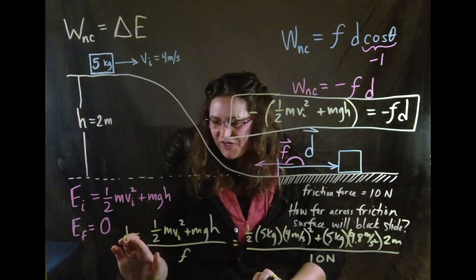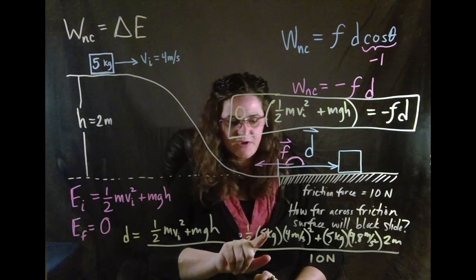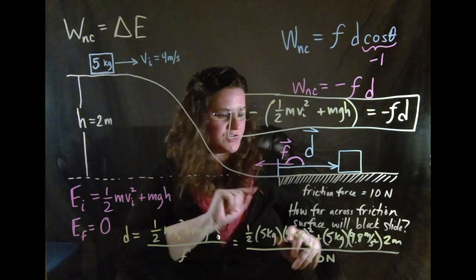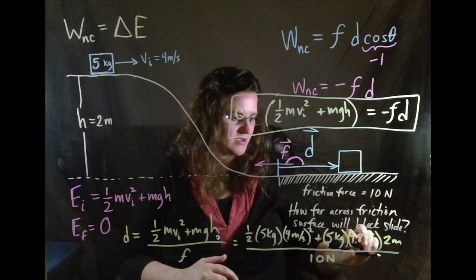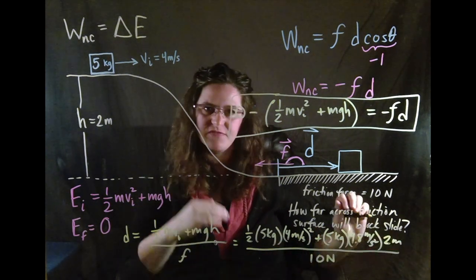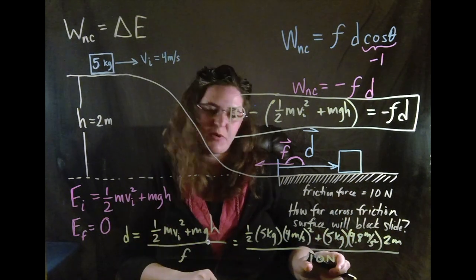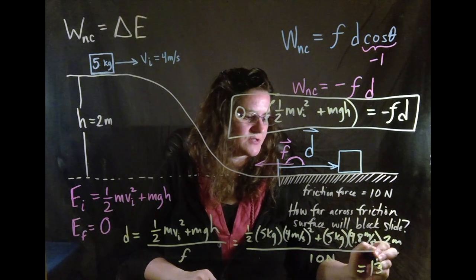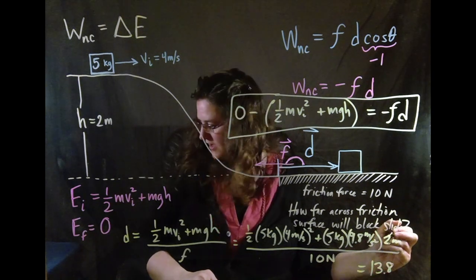All right, I have put in everything that I was given, 5 kilograms, 4 meters per second. That was our initial energy and the gravity and the height of the initial hill and divided it by the friction force. And what you get if you solve this all out is 13.8 meters.